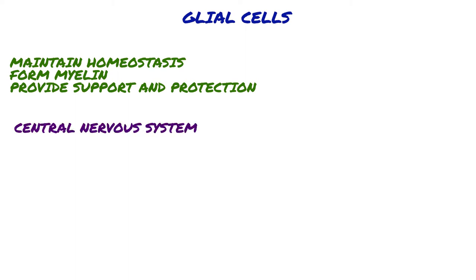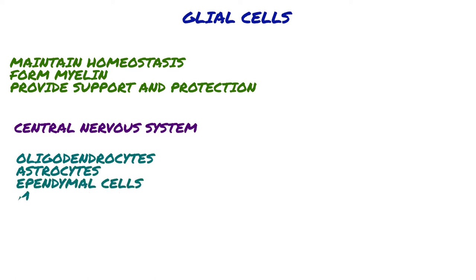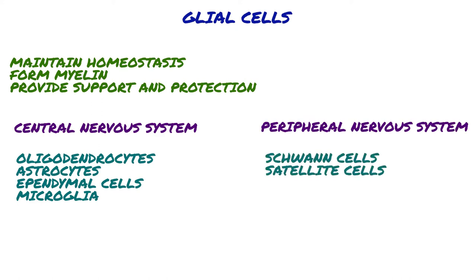In the central nervous system, glial cells include oligodendrocytes, astrocytes, ependymal cells, and microglia. And in the peripheral nervous system, glial cells include Schwann cells and satellite cells.